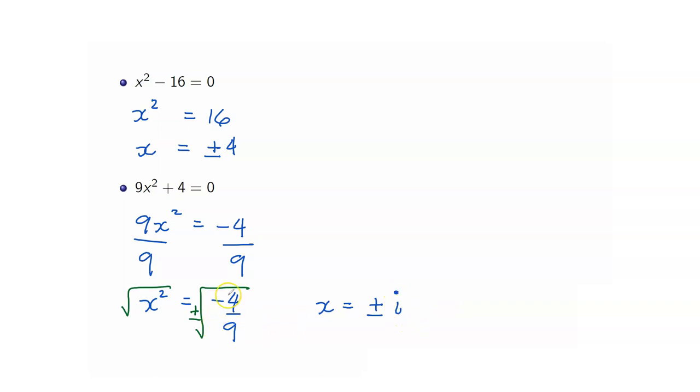And then you get the square root of 4 over 9, which is 2 thirds. Or you write that as x is equal to plus or minus 2 thirds i.